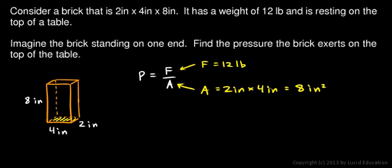So if we do the math here, pressure is force over area. That's going to be 12 pounds divided by 8 square inches. And 12 divided by 8 comes out to 1.5. And you can see the units we have here. Pounds per square inch. So 1.5 pounds per square inch.